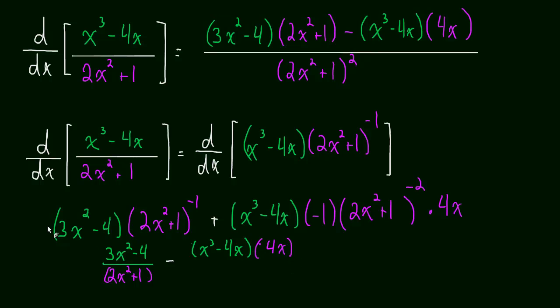And now we can send this here, this negative exponent, to the denominator, or that whole term with the negative exponent. And that becomes 2x squared plus 1 squared.